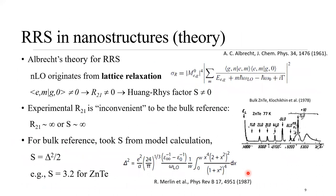So, specifically, how do people use this theory for nanostructures? First, we have to assume these matrix elements are non-zero. If they are non-zero, you can calculate the R₂₁ ratio between second-order and first-order, which will be non-zero. Then you can derive from that a Huang-Rhys factor. However, it is inconvenient to use experimental data as a bulk reference, because for the bulk spectrum this ratio is actually infinity, which would imply an infinitely large Huang-Rhys factor. So instead, people are actually using a different theory to calculate the reference value — a theory developed for something else but widely used in this community — which can calculate a Huang-Rhys factor, for instance for most II-VI semiconductors, on the order of two or three.